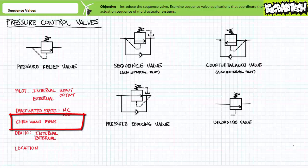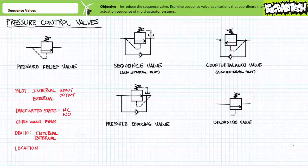Check valve bypasses: some of these valves have check valve bypasses, some of them don't. The ones with check valve bypasses, like sequence, counterbalance, and pressure reducing valves, are designed to control pressure in one direction and then be bypassed in another. The ones without check valve bypasses, like pressure relief valves and unloading valves, are ordinarily employed in regions with unidirectional flow paths, rendering reverse operation a non-issue.